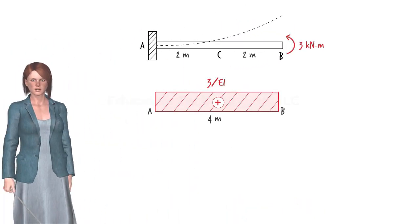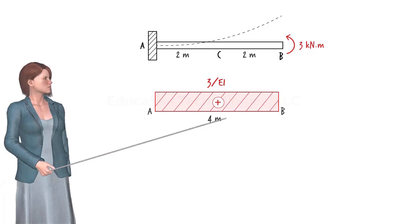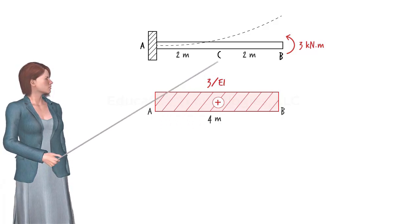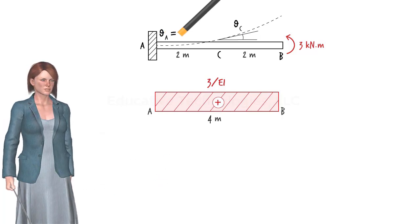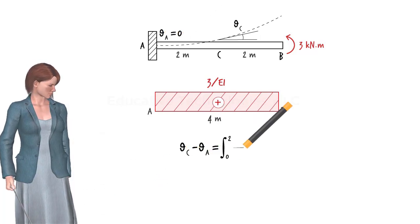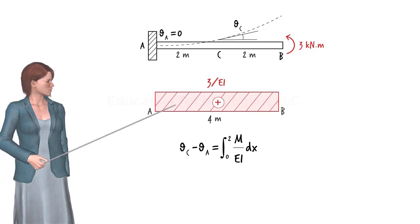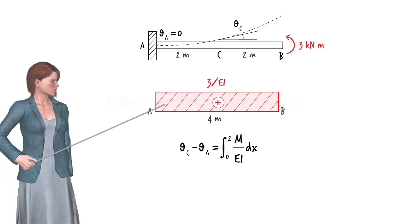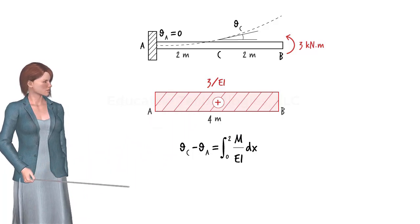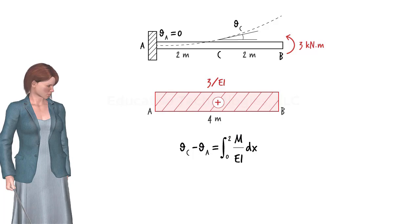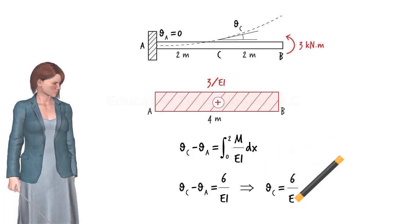Let's consider another example. Suppose we wish to determine the slope of the elastic curve at the midpoint of the cantilever beam. Since we know theta A, we can write the equation. The area under the M over EI diagram for the beam segment between 0 and 2 is 6 over EI. Therefore, we can write the slope at the midpoint.